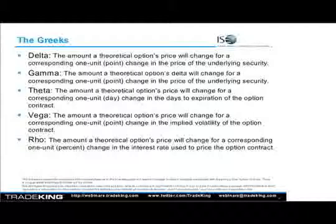Theta is the amount an option's price will change for a corresponding one-unit, one-day change in days to expiration. Theta can sometimes be a seven-day theta, but they'll usually state it if that's the case. Vega is the amount the theoretical options price will change for a one-point change in implied volatility — I like to call vega the Rodney Dangerfield of the Greeks, because it just doesn't get the respect it deserves; it can be a very big part of trading options. Rho is the interest rate component from the Black-Scholes model and is a big deal for longer-term options like LEAPs, since longer-term options have more exposure to carry costs.